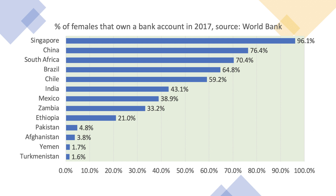In Singapore, 96% of females owned a bank account in 2017. That figure was over three-quarters in China, over 70% in Africa, and nearly two-thirds in Brazil. But in India, less than half of females have a bank account; in Mexico, less than 40%. In Ethiopia — one of the fastest growing countries in the world — only one woman in five held a bank account in 2017, and in Yemen and Turkmenistan, less than one female in 50 had a bank account. The availability of basic financial services and the ability to save is highly limited in those countries, constrained by social norms but also by very low per capita incomes.